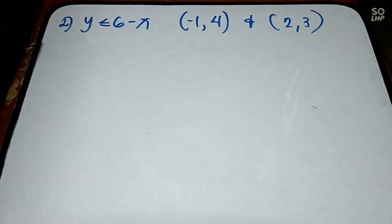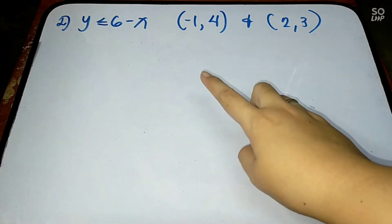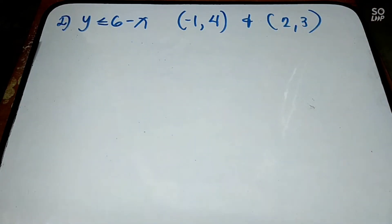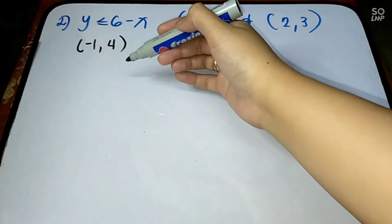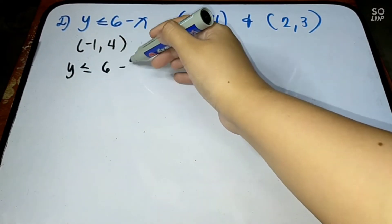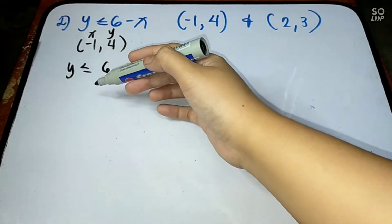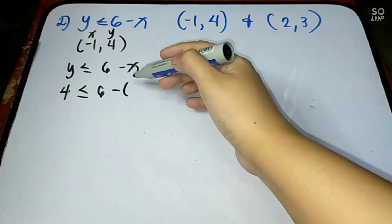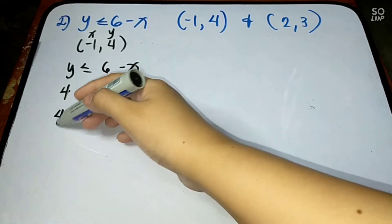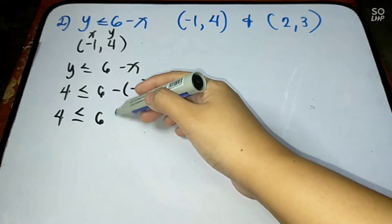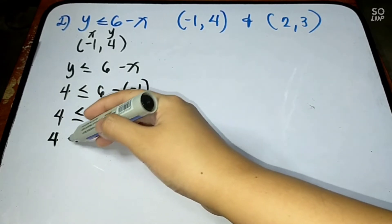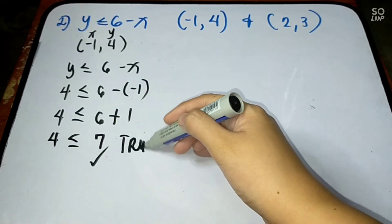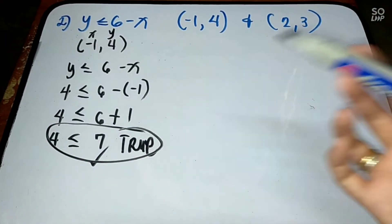Let's have another example. Example number 2: y is less than or equal to 6 minus x. We are going to test the points (-1, 4) and (2, 3). For (-1, 4): negative 1 is x and 4 is y. Substitute: 4 less than or equal to 6 minus (-1). Since it is negative, place it in parentheses. Simplifying: negative times negative becomes positive 1, so 6 plus 1 gives us 4 less than or equal to 7. Is 4 less than or equal to 7? True.